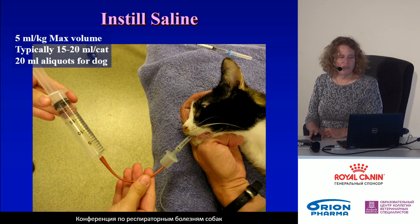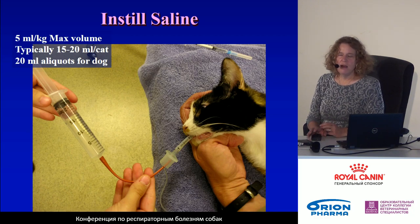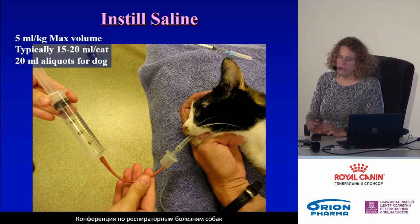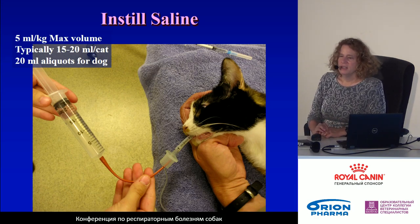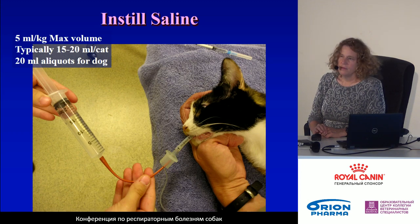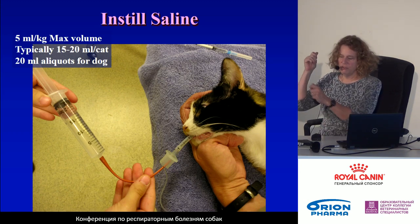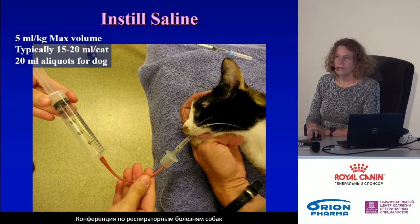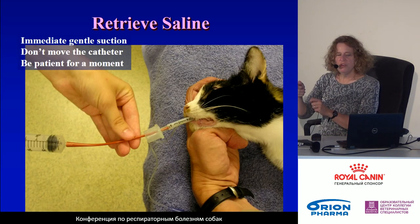Once the catheter is in place, attach your syringe with saline — typically for a cat 15 to 20 milliliters, for a dog usually closer to 20 milliliters. Simply infuse the saline with steady pressure on the plunger.